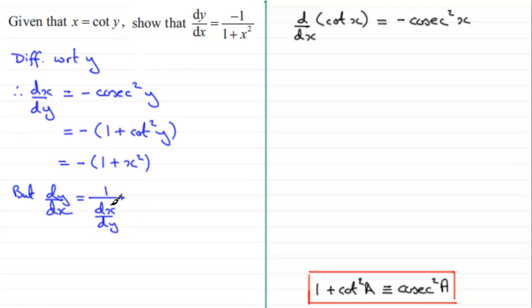So, if we do that, we therefore have that dy by dx is equal to the result that we want. Minus 1 over 1 plus x squared.